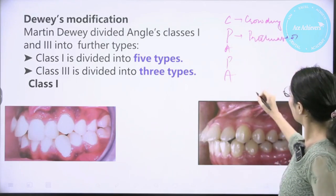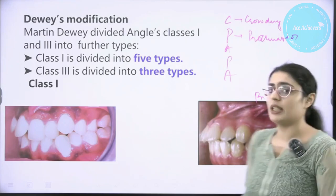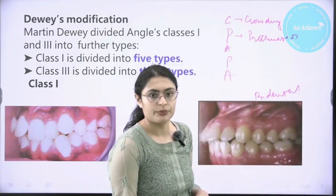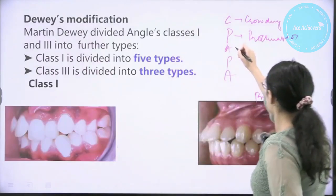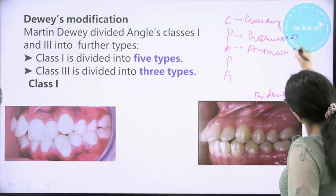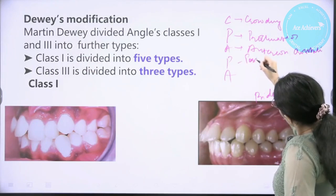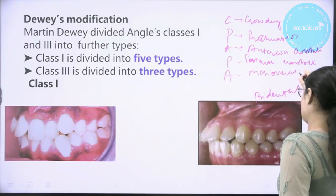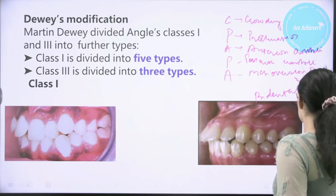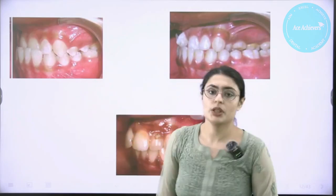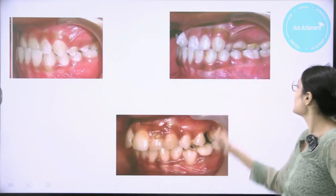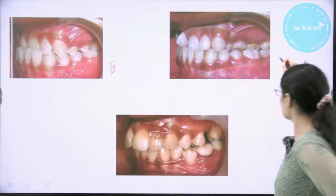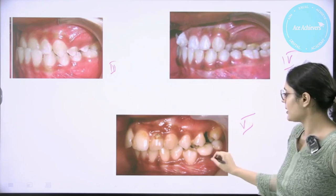The 'P' stands for proclination — this covers all bidental protrusions. A Class 1 molar relation with proclined teeth is Angle's Class 1 Type 2. The second 'P' is for anterior crossbite and the 'A' stands for posterior crossbite. An anterior crossbite with a Class 1 molar relation is Type 3, a posterior crossbite with Class 1 molar relation is Type 4, and Type 5 is where the maxillary molar has migrated mesially.